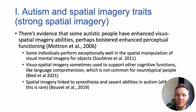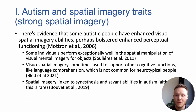There's evidence, for example, that some autistic individuals perform exceptionally well in the spatial manipulation of visual mental imagery, like figuring out the rotation of 3D figures in letters. In language comprehension, there's evidence too that some autistic individuals rely on visuospatial thinking to understand verbal content.